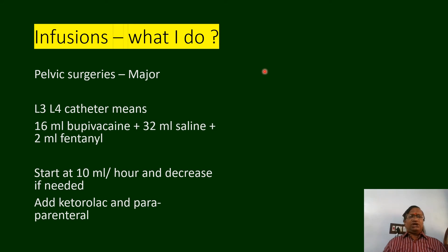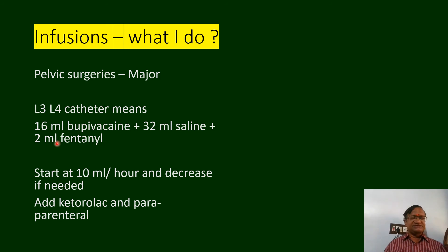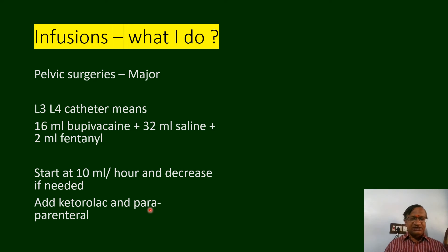For major pelvic surgeries with an L3-L4 catheter, my regimen is: 16 ml bupivacaine + 32 ml saline + 2 ml fentanyl, making a 50 ml syringe. Start at 10 ml per hour and decrease if needed. I always add injection ketorolac and paracetamol, sometimes tramadol 50 mg IV.